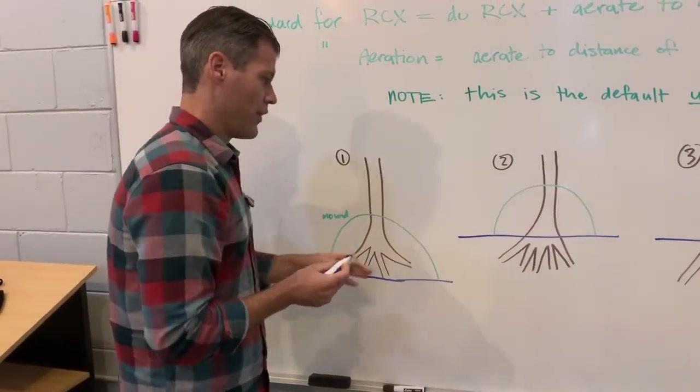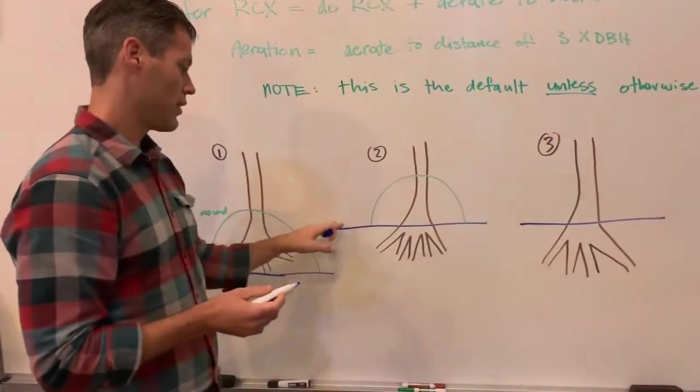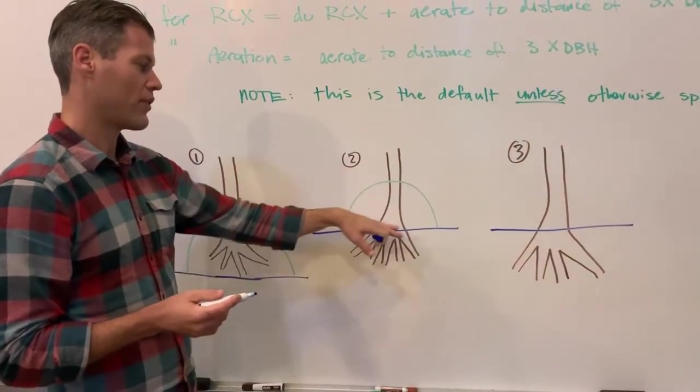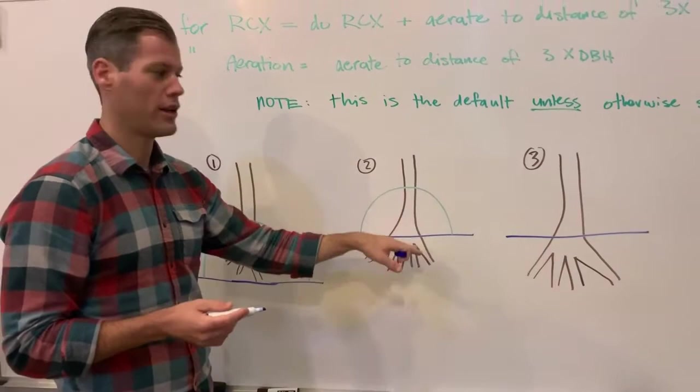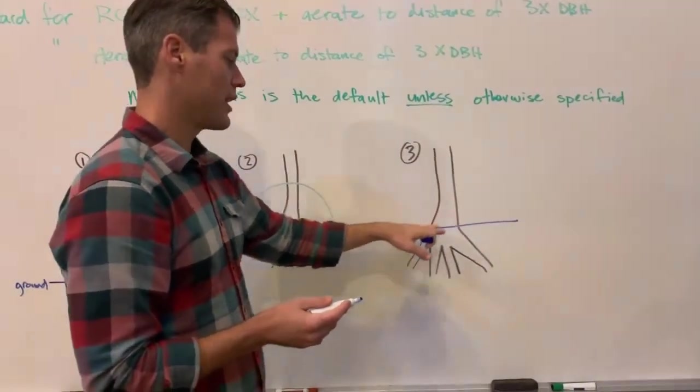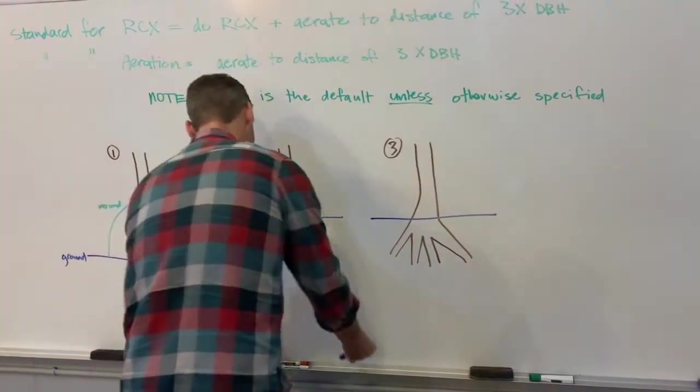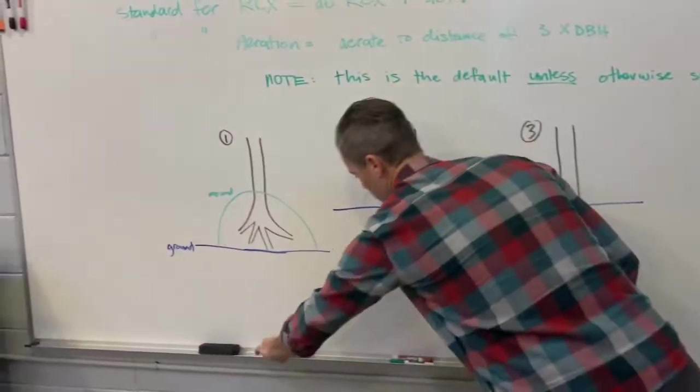So this case, same thing: ground, mound, tree, but except here the tree has actually been planted right. It just has this mulch volcano on it. In this one, tree is planted right and there's no mulch volcano. And actually, let me draw one more quick scenario for you. This is number four.